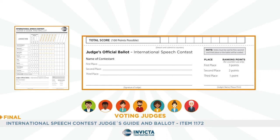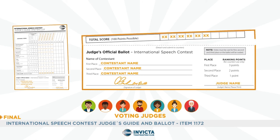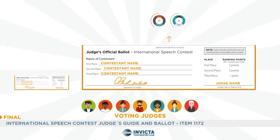After all speeches have been delivered, the voting judges fill in the international speech contest ballots and add up all the points of each speech to find the first, second, and third place in decreasing order of points given to the contestants. After filling it in, they must sign the document and hand it over to the counters.